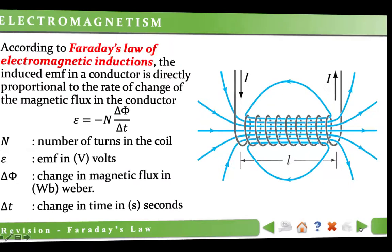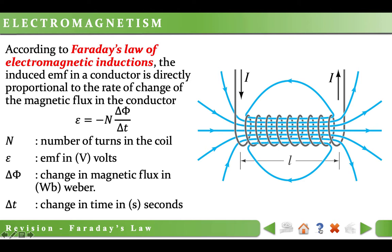The amount of induced EMF is calculated by Faraday's law. According to Faraday's law of electromagnetic induction, the induced EMF in a conductor is directly proportional to the rate of change of the magnetic flux in the conductor. We can formulate it as: epsilon equals negative N times delta phi over delta t. Epsilon represents the induced EMF, N is the number of turns in the coil, delta phi is the change in magnetic flux, and delta t is the change in time. The induced EMF opposes the external magnetic field, thus we use a minus sign in front of the formula.